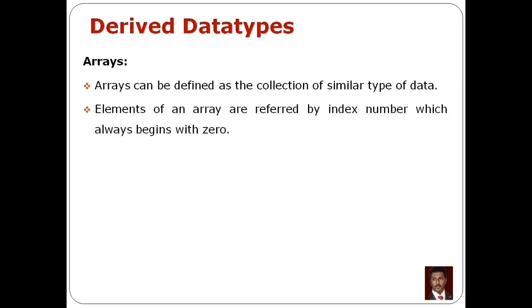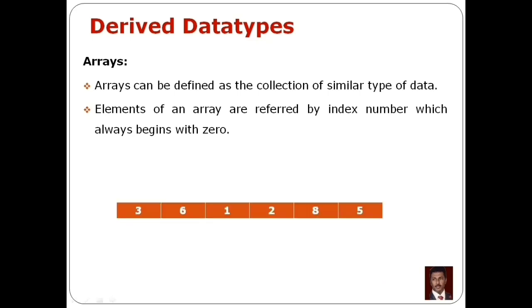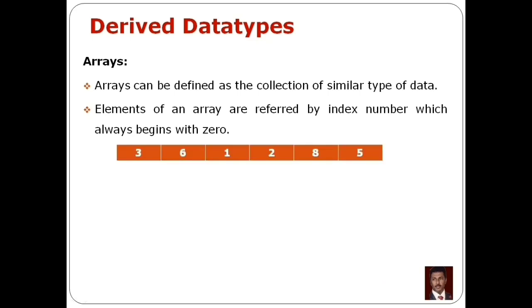When we refer to the elements in an array, we refer to them by index number. The index number always begins with 0. For example, when we collect a set of integer values, we have a store of values. This is an array, and the array representation is like this.